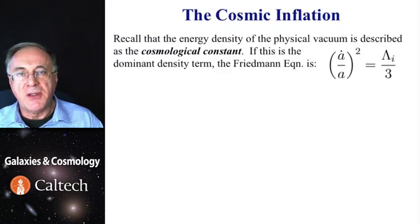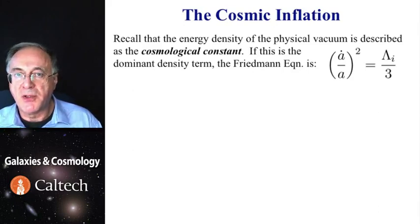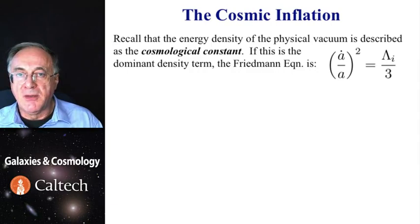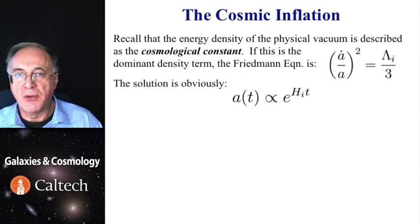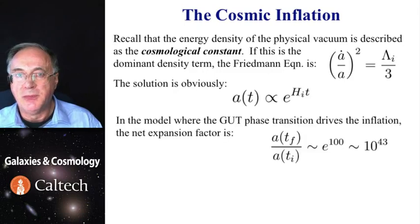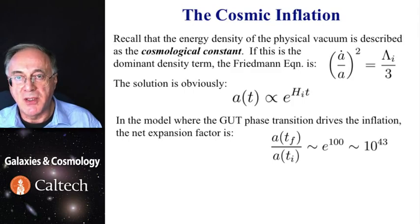Now, the energy density of the physical vacuum can be described as a cosmological constant. This is not the cosmological constant of today, but some much larger value from the early universe. In that case, the Friedman equation is given fairly simply and has an obvious solution, an exponential expansion. It turns out that in these inflationary models, this exponential expansion phase goes for about 100 e-folding times, or 40 orders of magnitude in size.